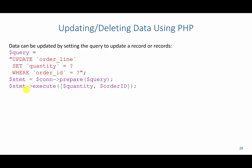In this video, we are going to go over additional commands that you can execute using PHP to interact with your database. Just like with our SELECT and INSERT statements, we can update data using an UPDATE query. We replace the values we're going to provide with question marks, so the quantity will be a question mark and the order ID will be a question mark, which will then be provided from previously defined variables. The first variable substitutes for the first question mark, and the second for the second.